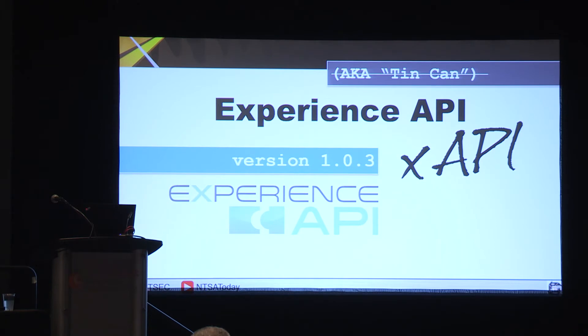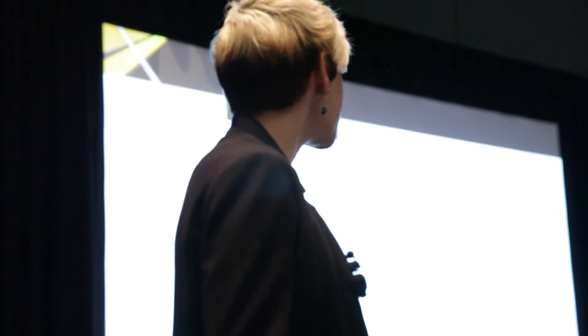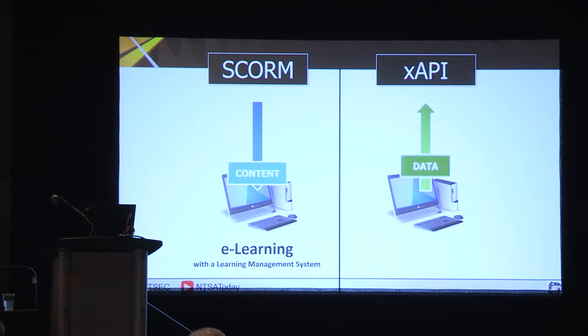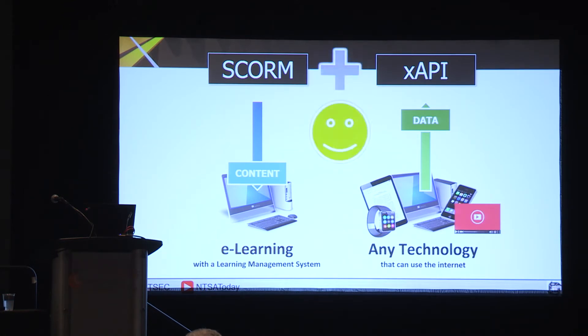XAPI is really about capturing experience — very broadly defined — about learning, in a way that software programs can talk to each other about it. SCORM, as many of you will remember, is one of the data formats that the ADL initiative is pretty well known for. SCORM is really about how do you take e-learning content and get it into different learning management systems. With XAPI, it's really much more about how do you get those data out of the system — and not just a learning management system, but any type of technology. You can imagine that both of these capabilities will work pretty well together.